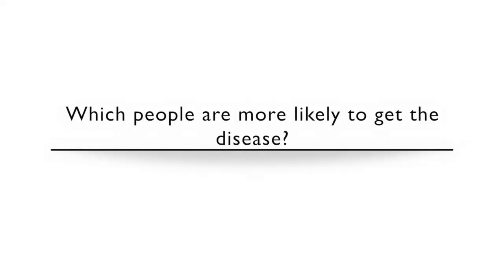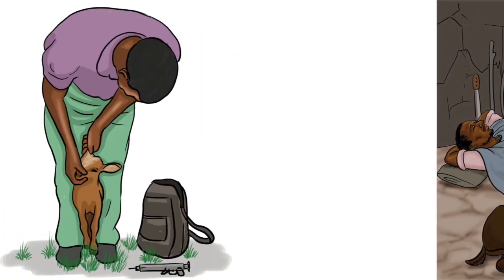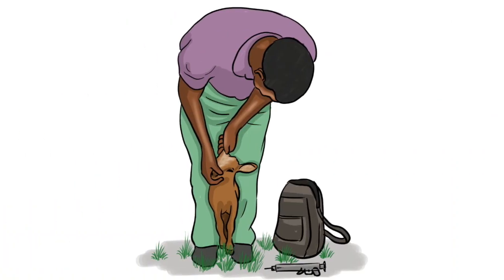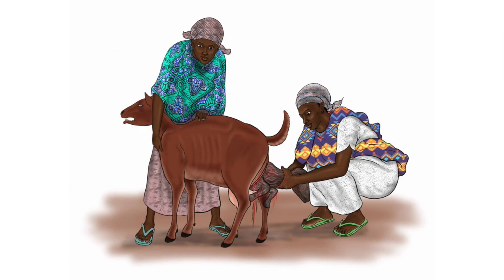Which people are more likely to get the disease? Herders sleeping with their animals in sheds, bomas, and kraals. People taking care of sick animals, particularly assisting aborting animals and those giving birth.